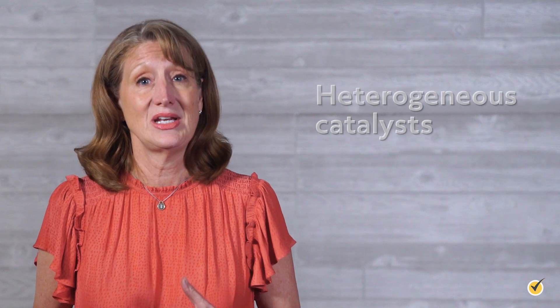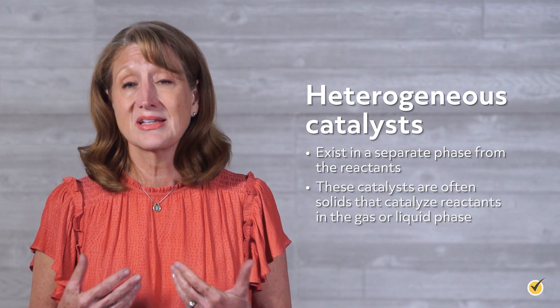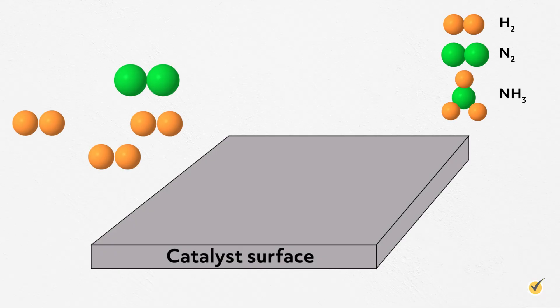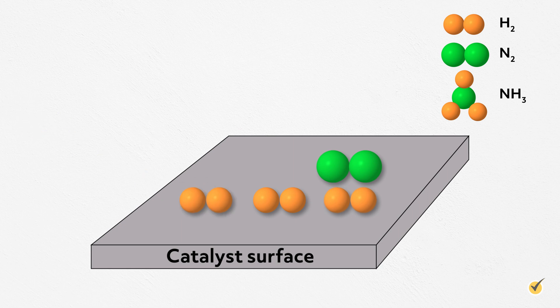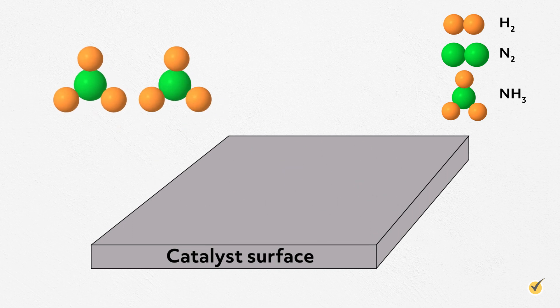Conversely, heterogeneous catalysts exist in a separate phase from the reactants. These catalysts are often solids that catalyze reactants in the gas or liquid phase. For example, in the mass production of ammonia from nitrogen and hydrogen gases, solid iron and oxides of potassium and aluminum catalyze an otherwise very slow reaction. This mechanism shows how the iron surface provides a location to stabilize nitrogen and hydrogen as they split into individual atoms. Without catalysts, many of the chemicals we use daily in agriculture, pharmaceuticals, and around the house would not be readily available.